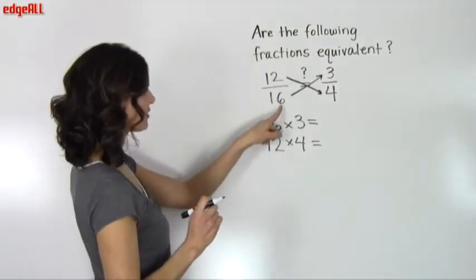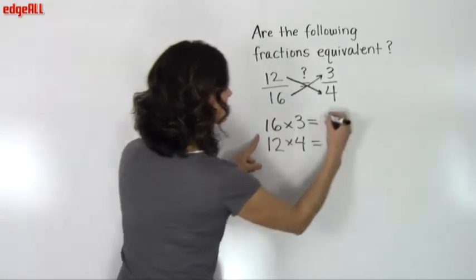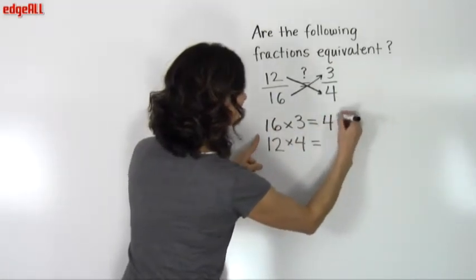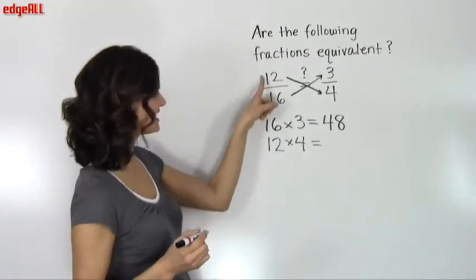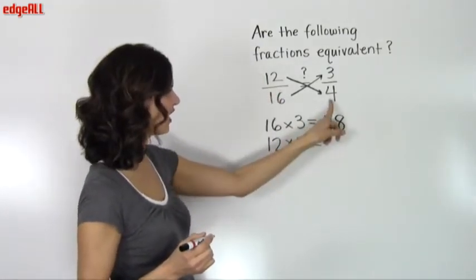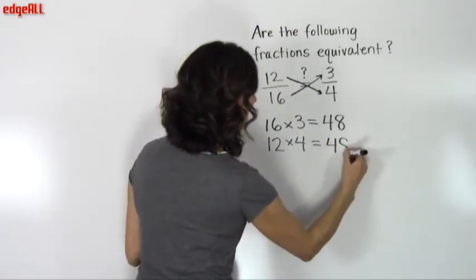So I'm going to start with 16 times 3. 16 times 3 equals 48. And my second multiplication is 12 times 4, and 12 times 4 also equals 48.